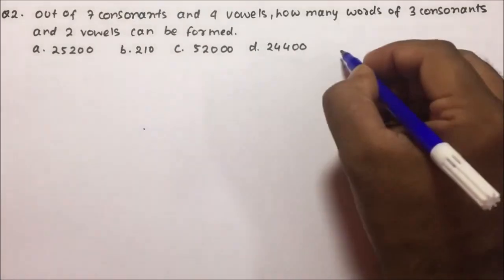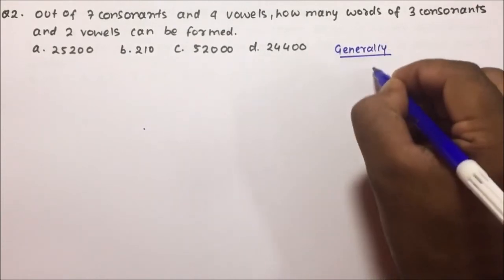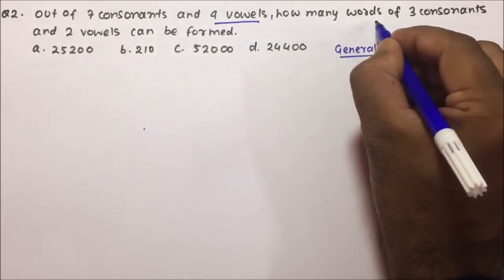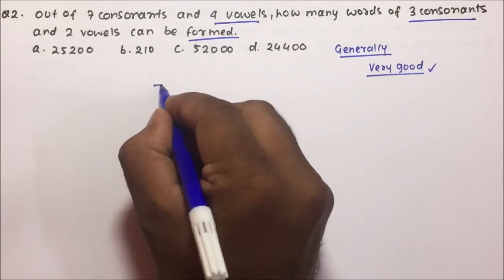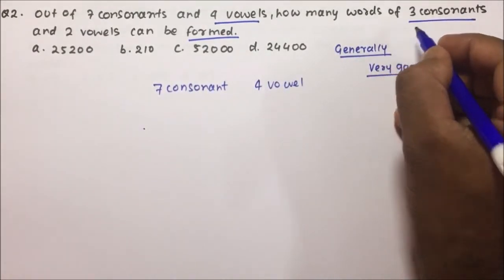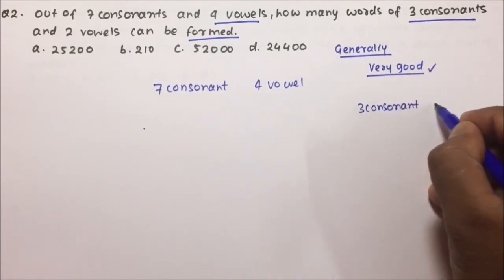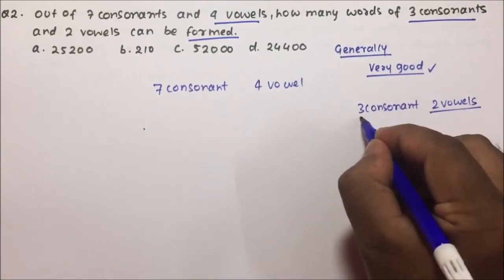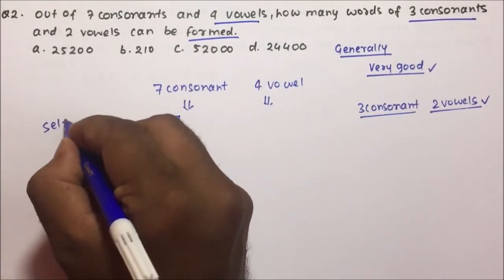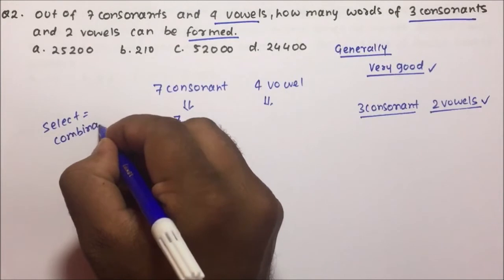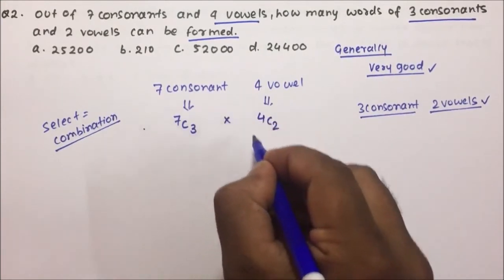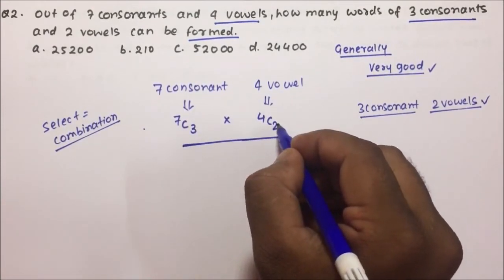Moving towards question number two — this is a very good question and students generally make a mistake here. Out of seven consonants and four vowels, how many words of three consonants and two vowels can be formed? We have seven consonants and four vowels, and we have to form words using three consonants and two vowels. The first step is to select — select means combination — so we select 3 consonants and 2 vowels: 7C3 × 4C2.